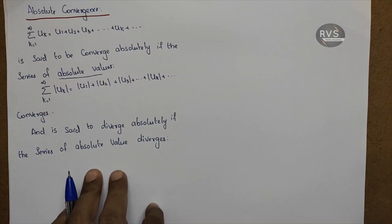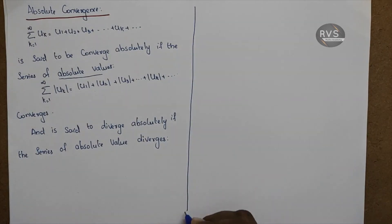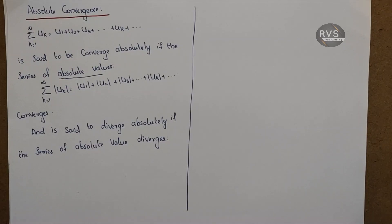The series is called absolutely divergent if the series of absolute values diverges, and absolutely convergent if it converges. To check absolute convergence, we don't just use the geometric series or p-test; we can also use the ratio test, root test, and limit comparison test, since these formulas work with modulus values.